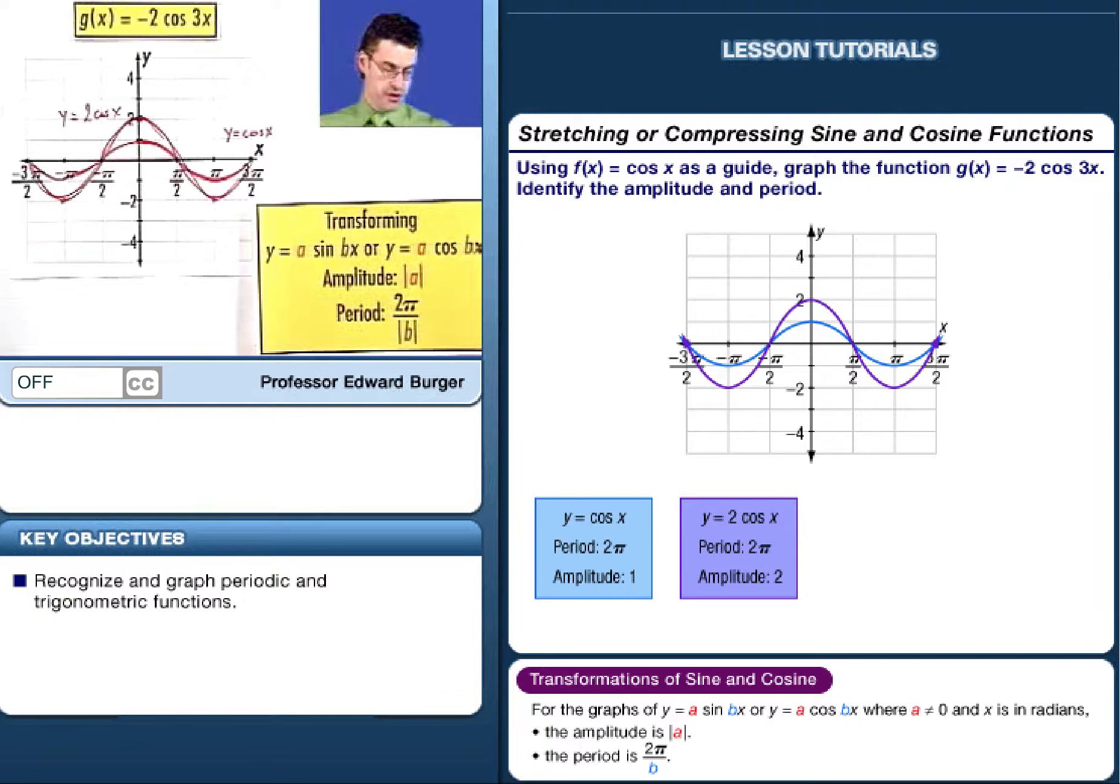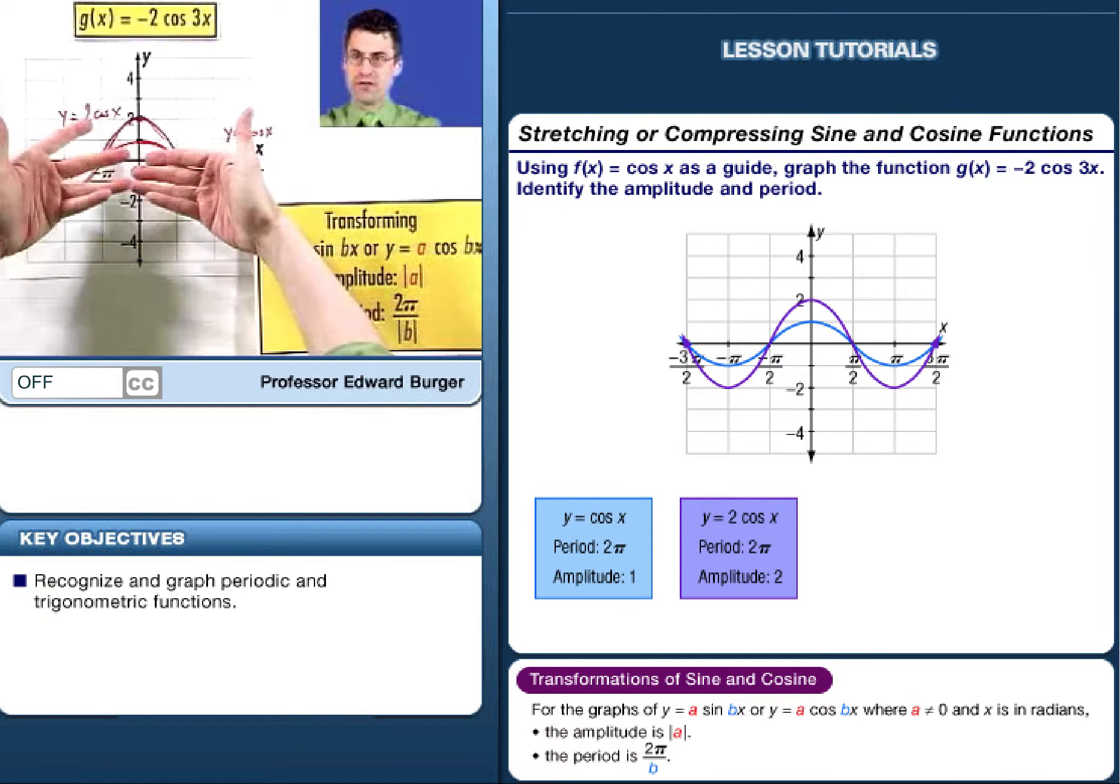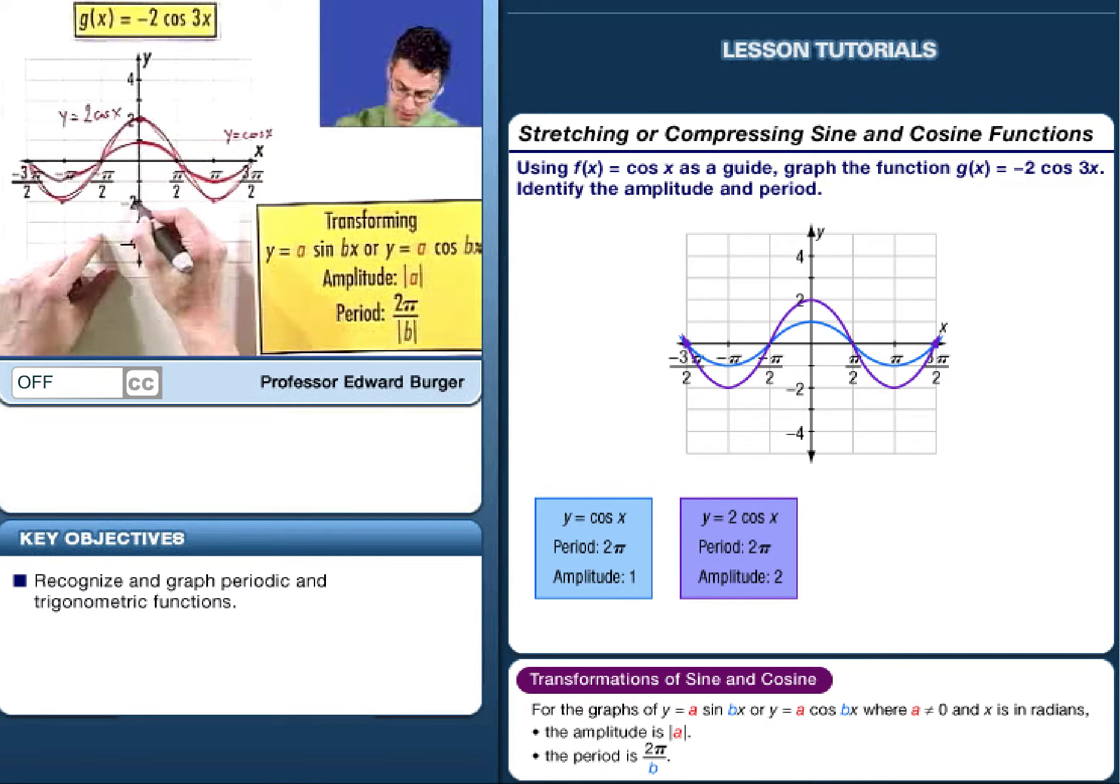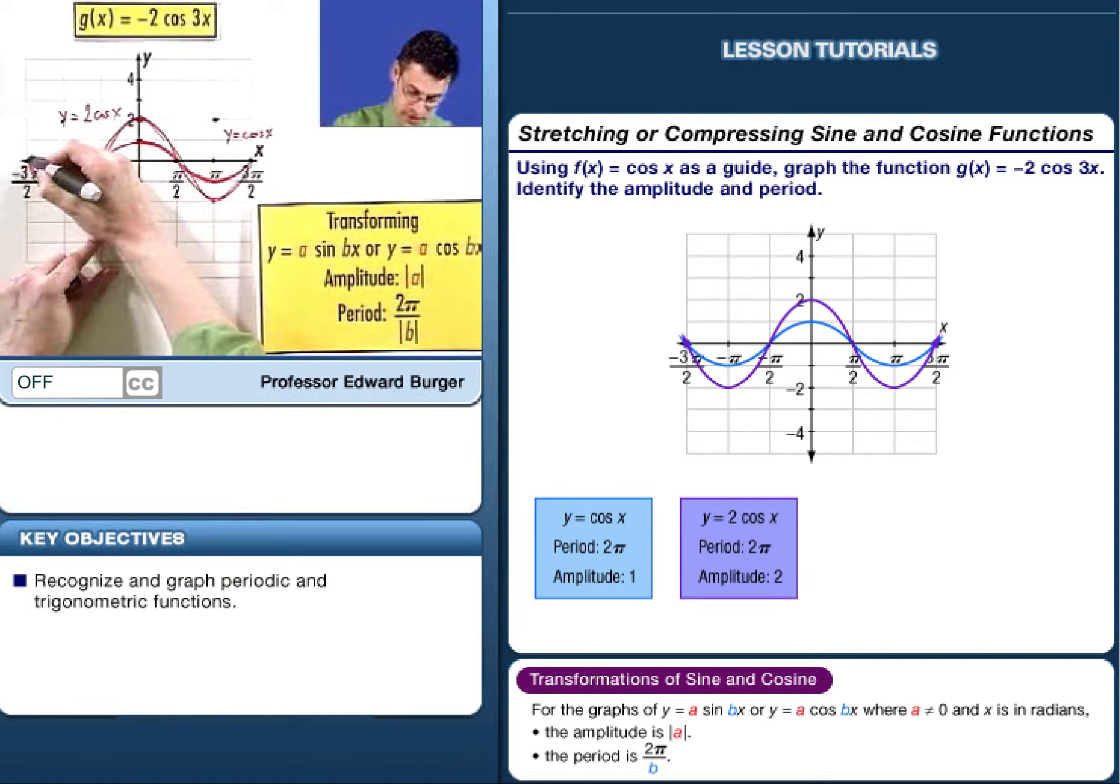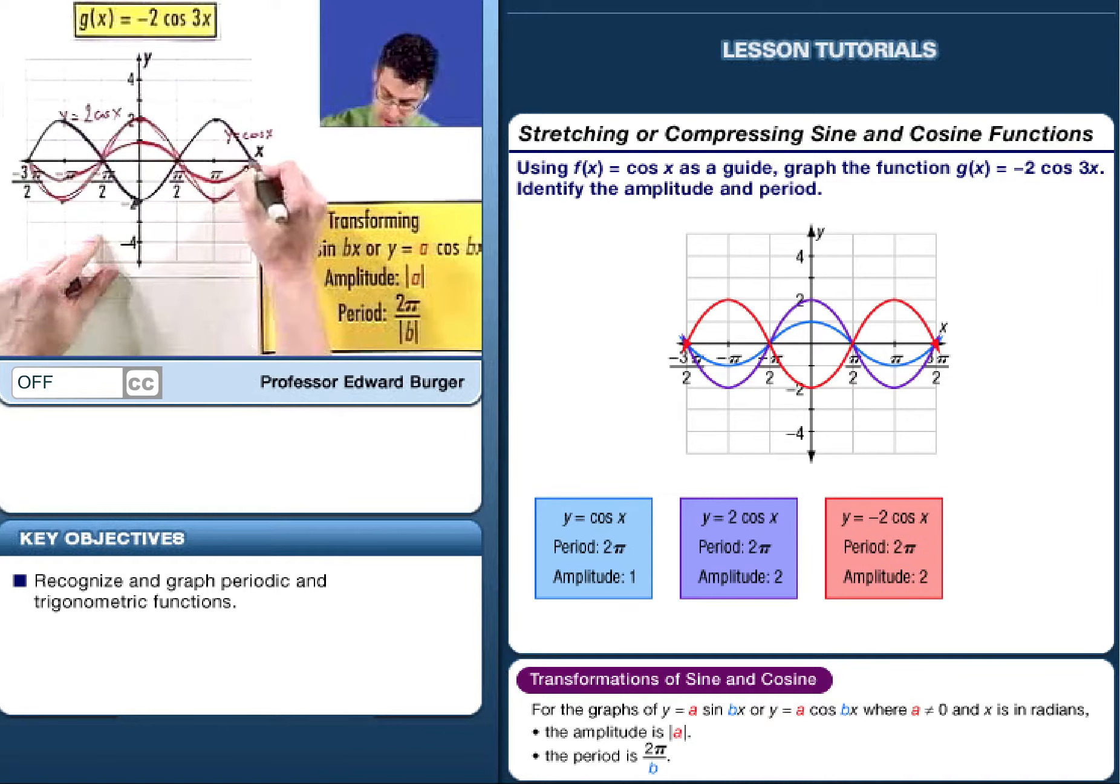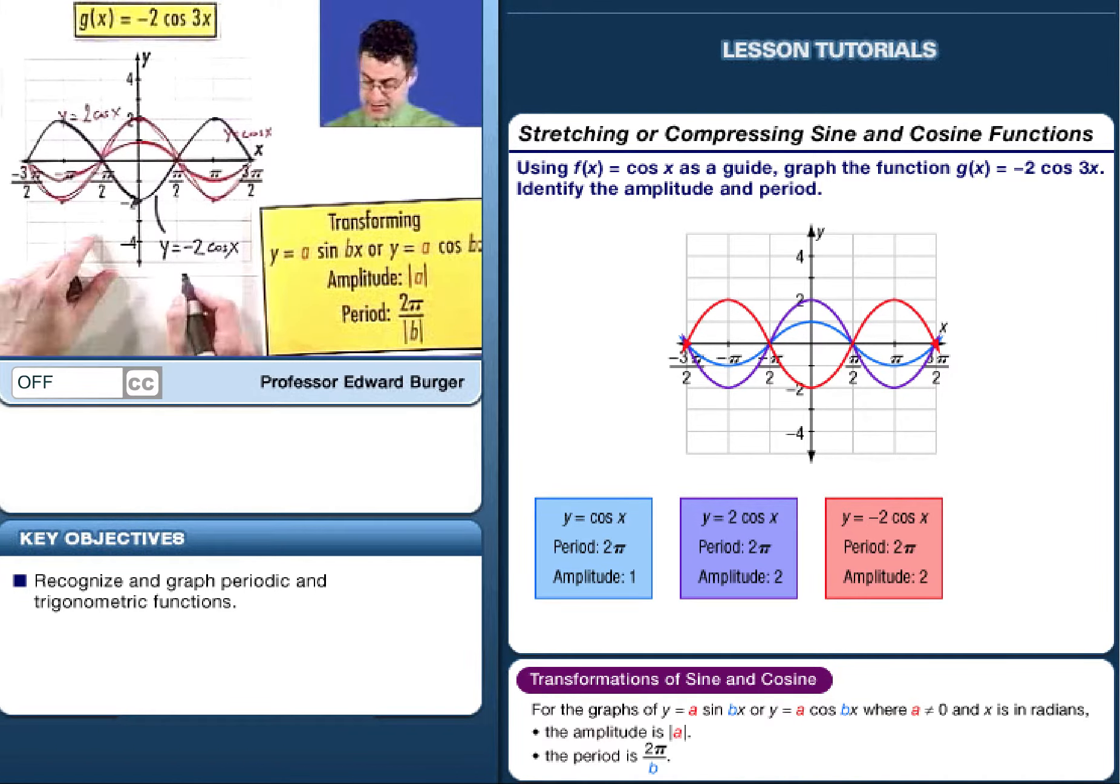Now, what's y equals negative 2 cosine x? Well, we know how to do that. We just take this picture and literally flip it over the x-axis. So this 2 becomes a negative 2. All points become the opposite. So what we see now is this. And so this purple is getting really close. This is y equals negative 2 cosine x.